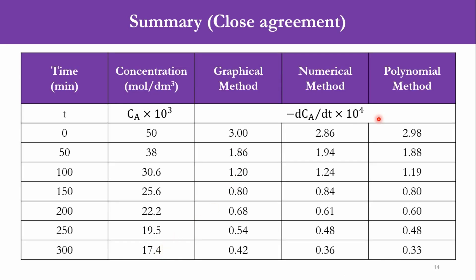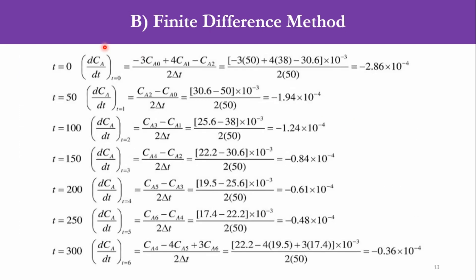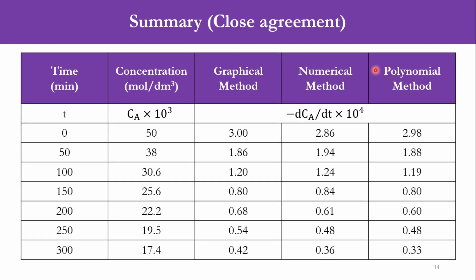We have not studied graphical method and polynomial method so you can simply ignore this. You can simply focus on time, concentration, and numerical methods. The time data is given to us here from 0 to 300 with a time interval of 50 minutes. The value of concentration given to us, and now from the numerical method we got -dC/dt×10^4. If you see, this value is dC/dt, so once we take 10^-4 to the other side it will become 10^4, and once you take minus to that side it will be -dC. So -dC/dt×10^4 will become 2.86, so 2.86, 1.94, 1.24, 0.84, 0.61, 0.48, and 0.36.